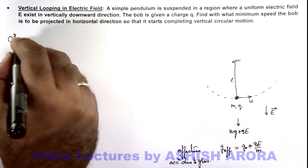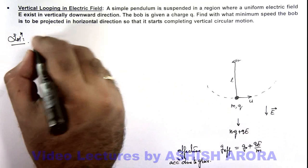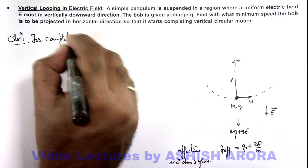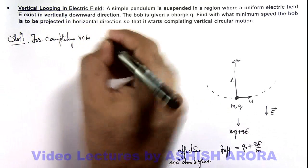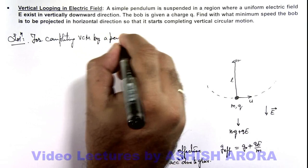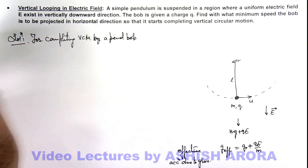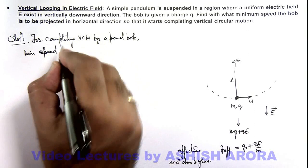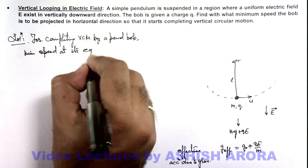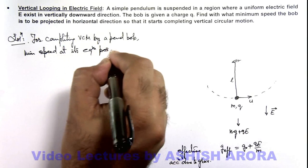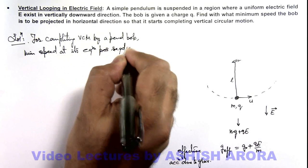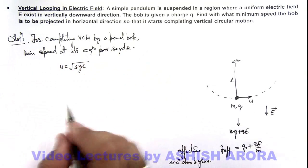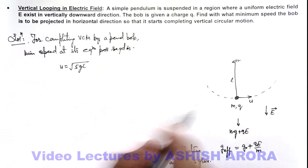So here we can write: in this situation, for completing vertical circular motion by a pendulum bob, minimum speed at its equilibrium position required is this minimum speed should be root 5 g l, which we have already studied in conceptual videos of circular motion.